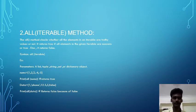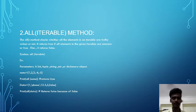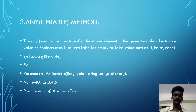The second one is all(iterable) method. The all() method checks whether all the elements in an iterable are truthful values or not. It returns True if all elements in the given iterable are non-zero or true, else it returns False. Its syntax is all(iterable), and the example is given below.